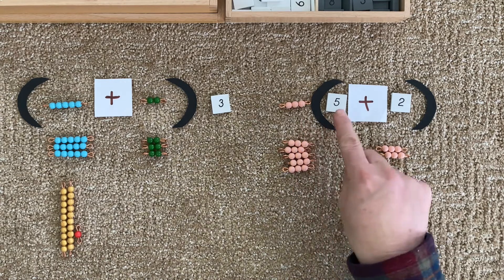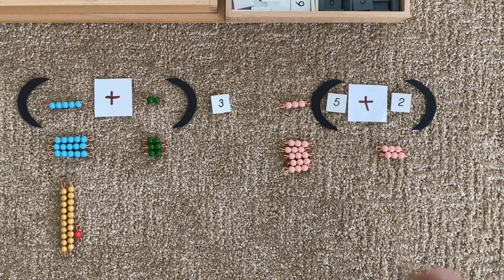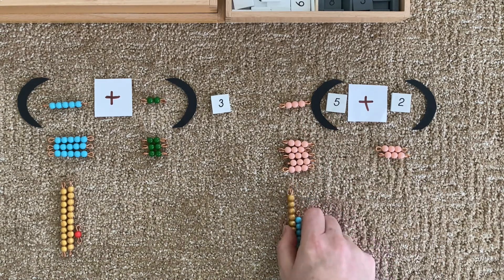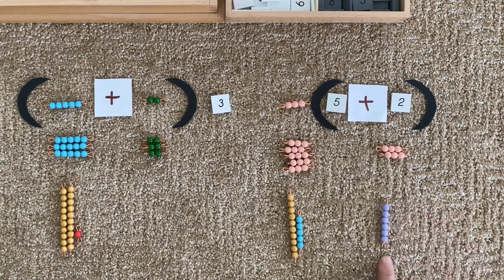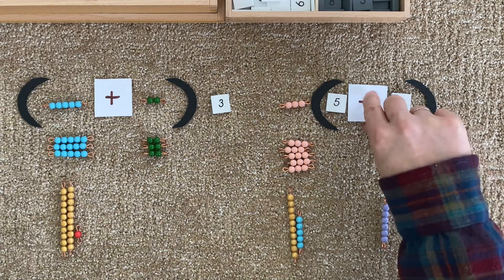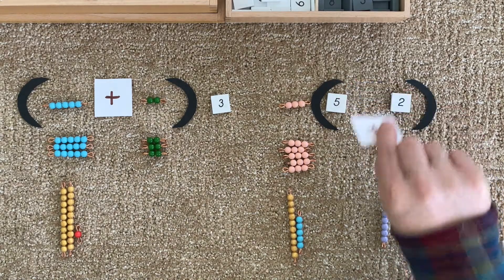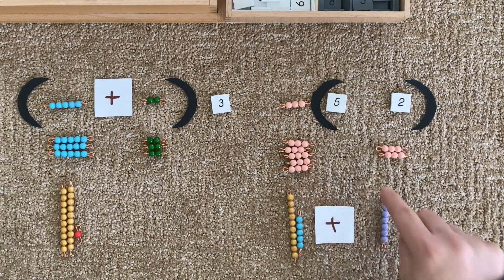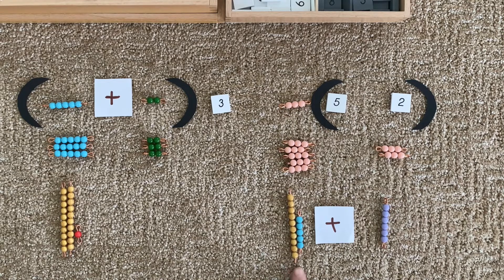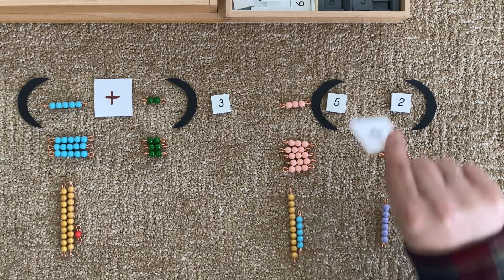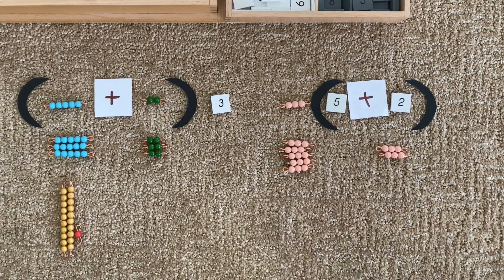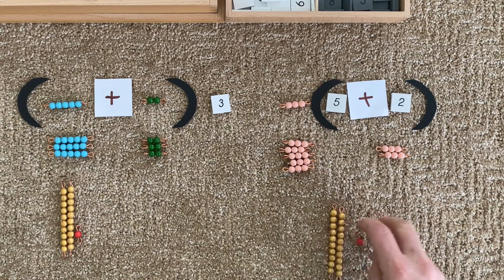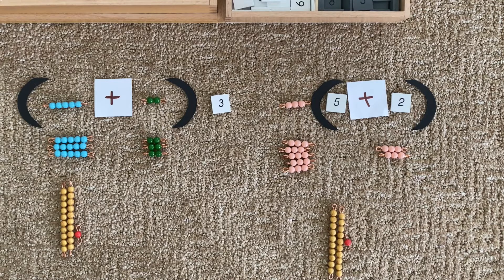Three taken five times is 15, and three taken two times is six. Remember, the term is asking us to add these products. So we have 15 plus six. And we'll exchange. And our answer is 21 again.